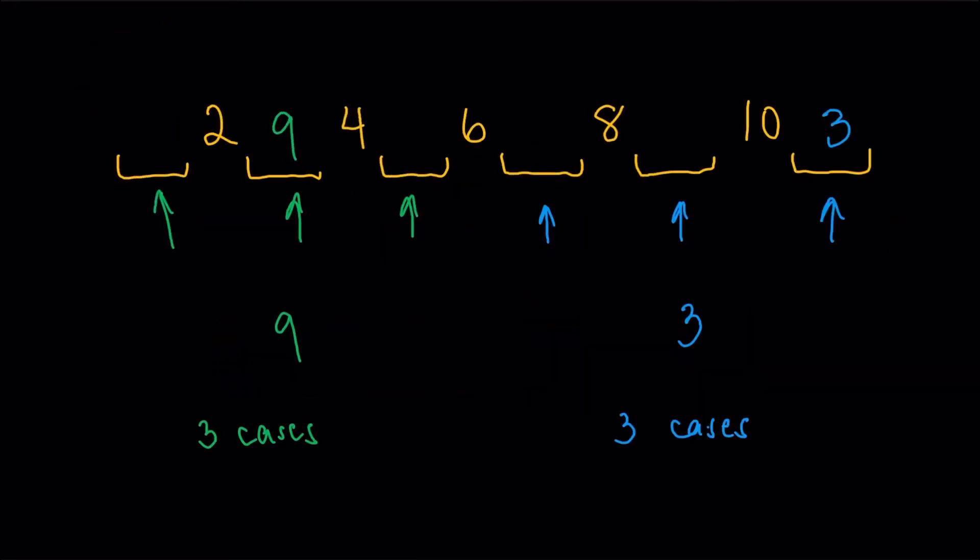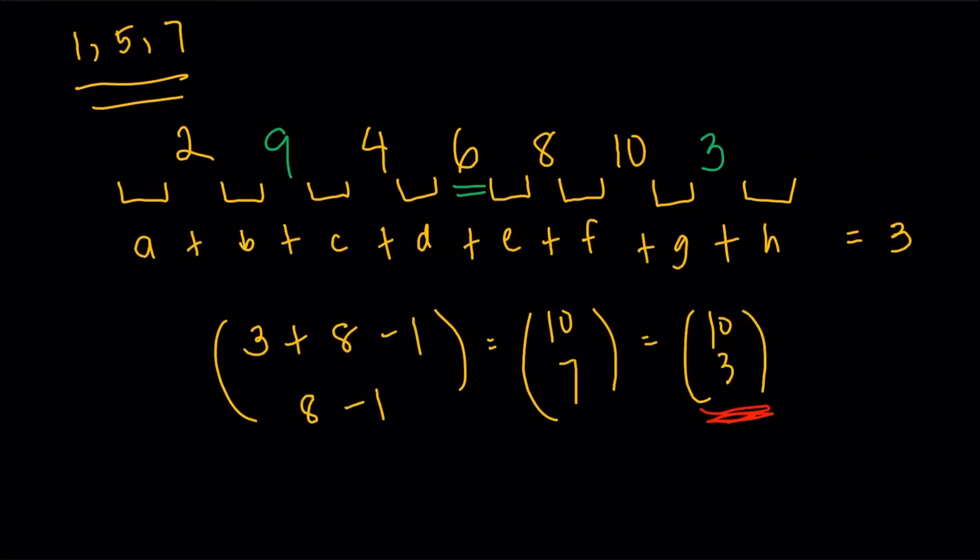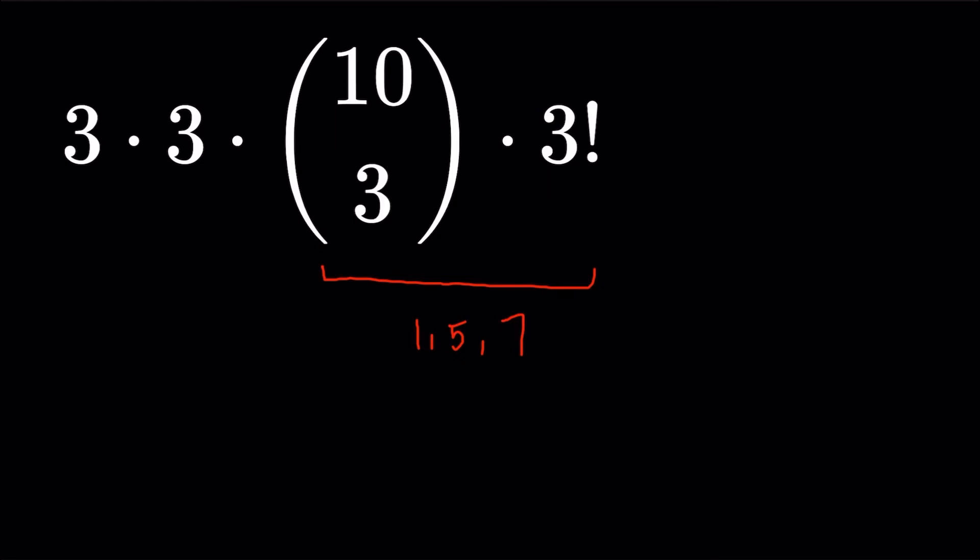And then the first two threes, the first three will be the nine, the second three will be the three. Actually, it's not really in order. It doesn't really matter. But just one of the three here is for the placement of the nine. One of the three here is the placement for the three. And then the third factor, the 10 choose 3 times three factorial, that's going to be the placement for the one, five, and seven. And lastly, we just have to evaluate that.